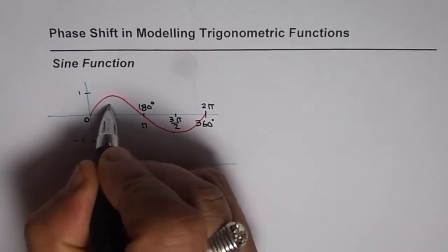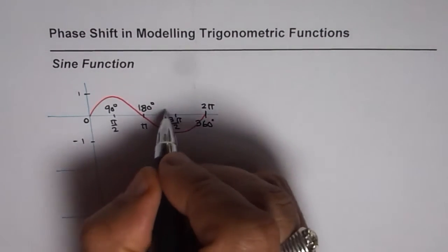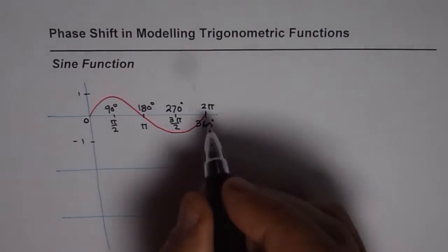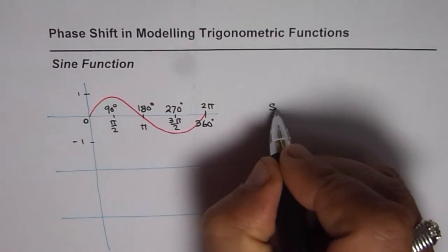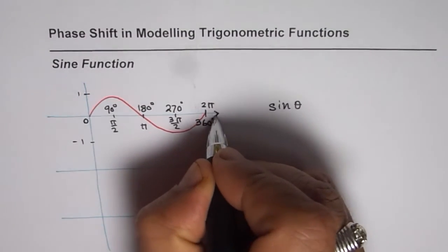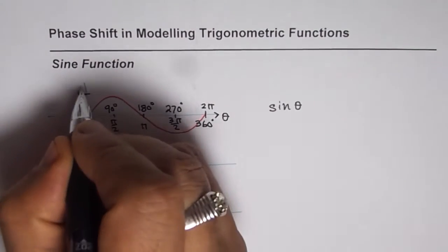In degrees you can write this as 180 degrees, that would be 90 degrees and this would be 270 degrees. That's the standard sine wave and equation for this sine wave is sine θ, where θ is along the x-axis and we are talking about y, so we say y = sin θ.